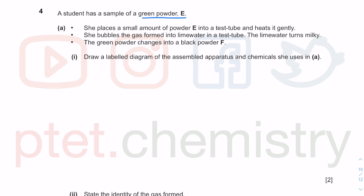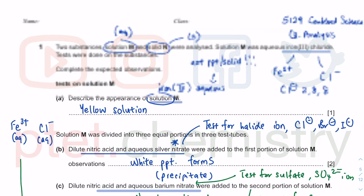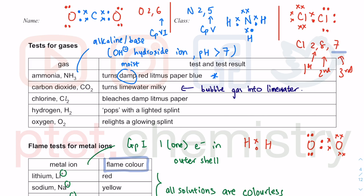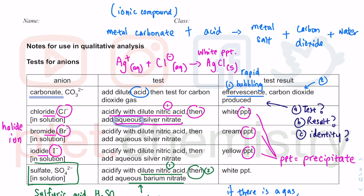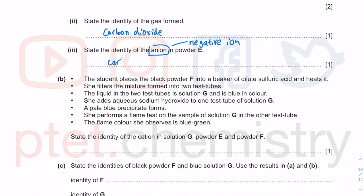In question 4, we have a sample of green powder E. We heat it in a test tube and bubble the gas into lime water. Lime water turned milky. This is the test for carbon dioxide. State the identity—this is definitely carbon dioxide. There is one anion, meaning negative ion. Carbon dioxide gas came from the carbonate CO3 2-. The anion is carbonate ion. What is the identity of the anion? It's carbonate anion.